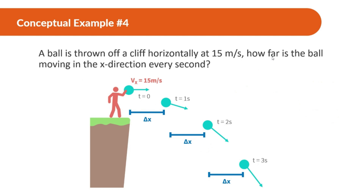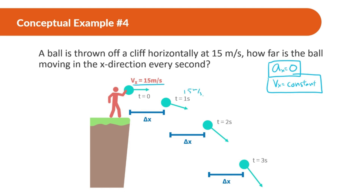Same ball thrown off a cliff horizontally at 15 meters per second. How far is the ball moving in the X direction every second? In the X direction, the acceleration is zero — it's not slowing down or speeding up — so the velocity is constant. If it's moving 15 meters per second at the beginning, it's moving 15 meters per second at every point. That means every second, it moves 15 meters in the X direction.